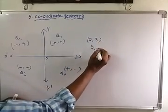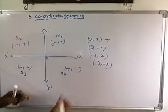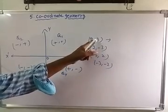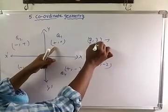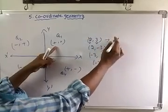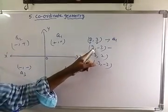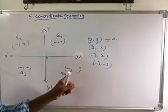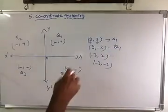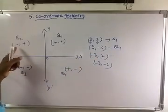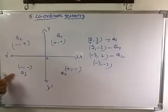For example, consider the points (2,3), (2,-3), (-3,2), and (-3,-2). The point (2,3): x is positive, y is positive, so it lies in Q1 (first quadrant). The point (2,-3): x is positive, y is negative, so it lies in Q4 (fourth quadrant). The point (-3,2): x is negative, y is positive, so it lies in Q2 (second quadrant). The point (-3,-2): x is negative, y is negative, so it lies in Q3 (third quadrant).